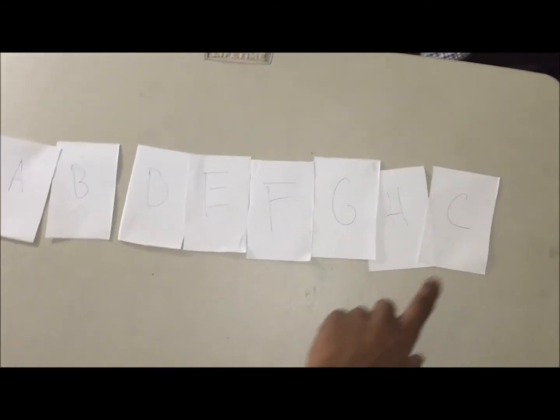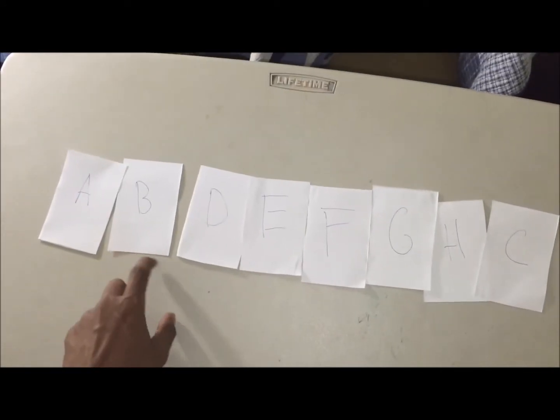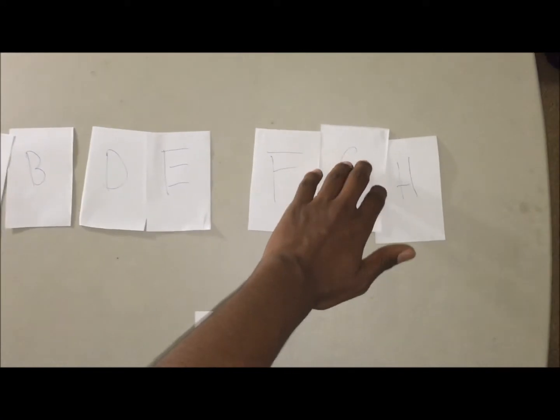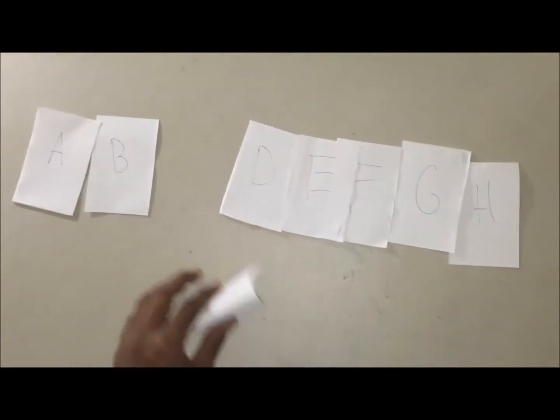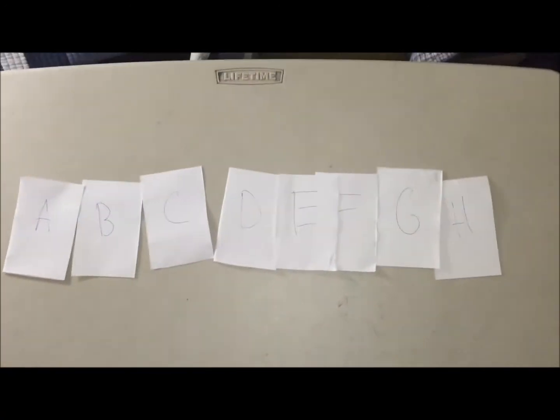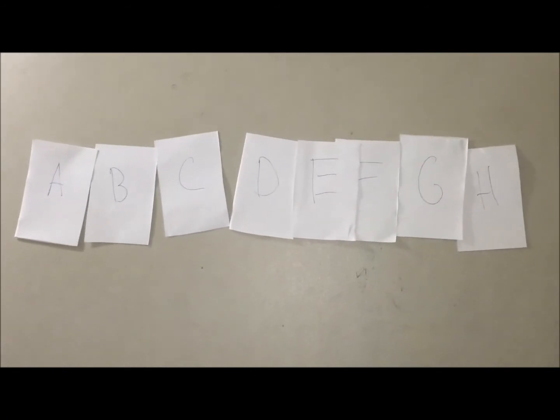And lastly, I know C comes between B and D, so I can do this. And there you have it. That's insertion sort.